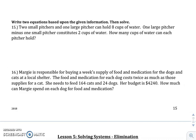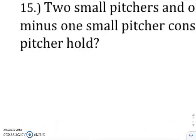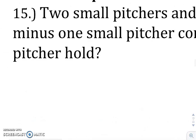So it seems like a lot of words, I get that, but if you look at it one sentence, one piece at a time, the first thing you should hopefully be noticing is that they're talking about pitchers. So I'm going to make my two variables, L and S. So L is going to be a large pitcher, and S is going to be a small pitcher.